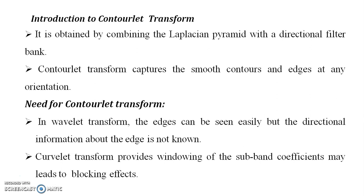First we are going to see about the introduction to Contourlet Transform. This Contourlet Transform consists of a double filter bank structure, namely a pyramidal directional filter bank, by combining the Laplacian Pyramid with the Directional Filter Bank structure. It is used to extract the contour features, that is the edge features. Contourlet Transform gives a multi-resolution and directional decomposition of images, and it allows different number of directions at each scale. Smooth contours obtained in any directional orientation can be clearly visible as edge information.